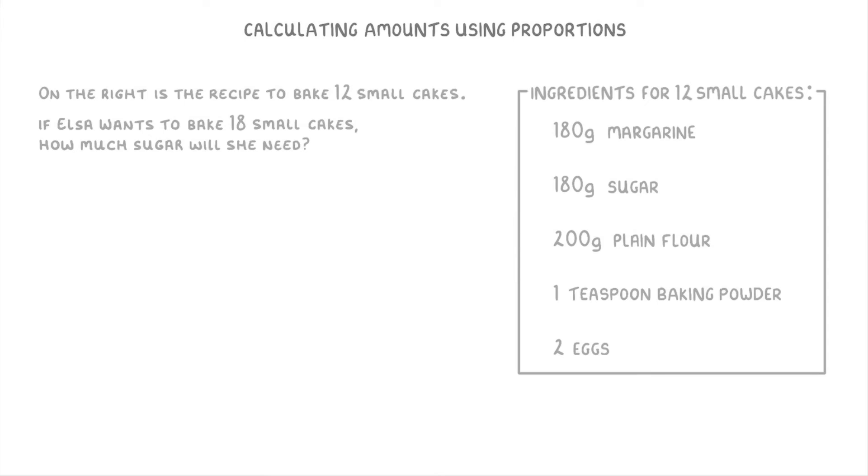So like in our previous questions, what we want to do here is first of all work out how much sugar she would need for one cake. And then multiply that by 18 to find out how much she'd need for all 18 cakes. So first, we take the 180 grams of sugar and divide it by 12 to find that each cake requires 15 grams of sugar.